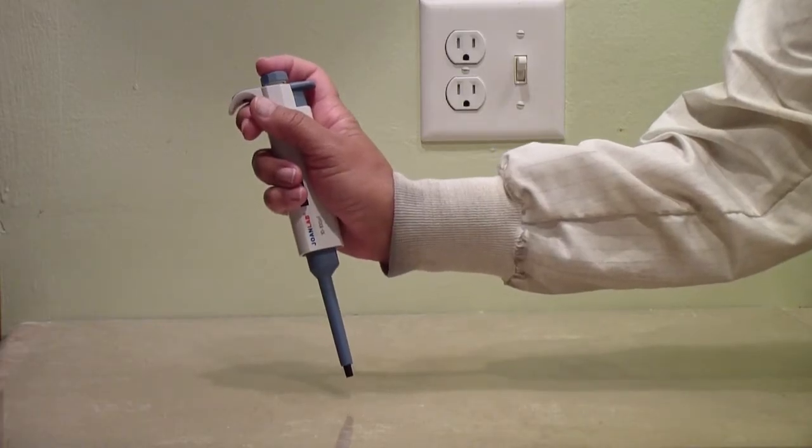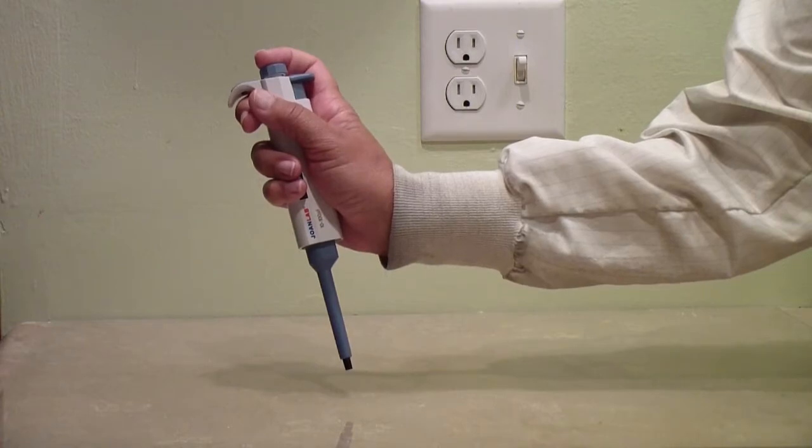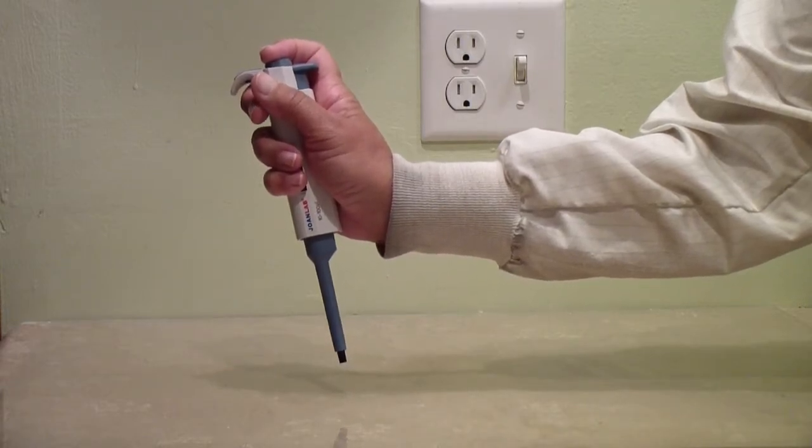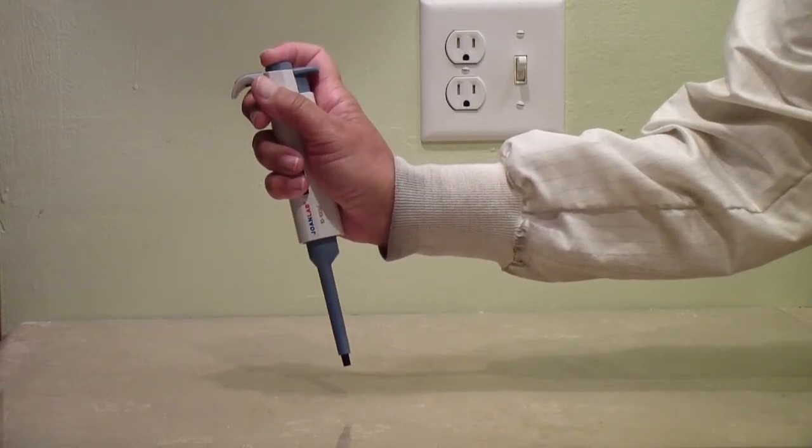Press gently down on the plunger. You should feel it come to a stop. This is called the first stop. If you press down harder on the plunger, you will feel that it can go down even further, all the way down, which is called the second stop.